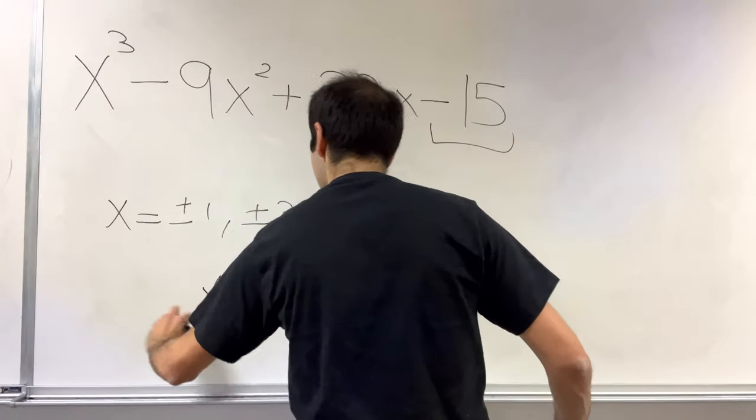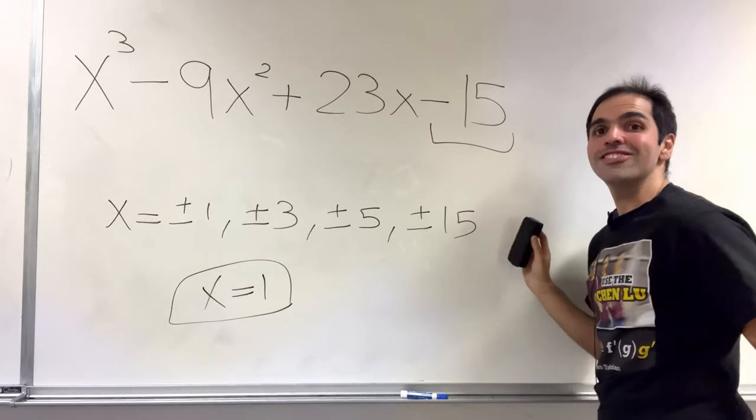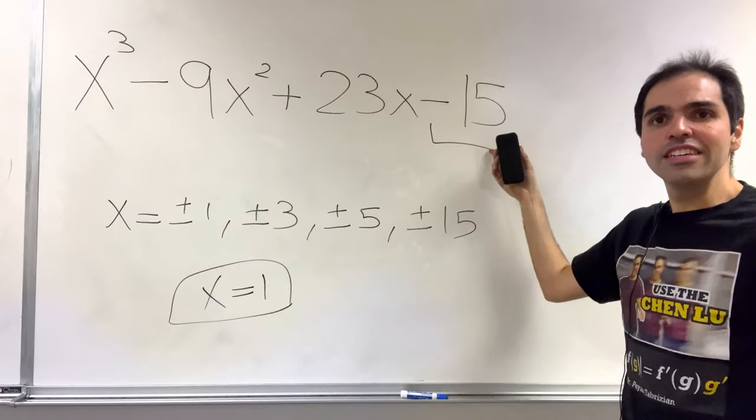And in fact you can check that x equals 1 works, because 1 minus 9 plus 23 minus 15 is 0. And therefore let's divide this by x minus 1.